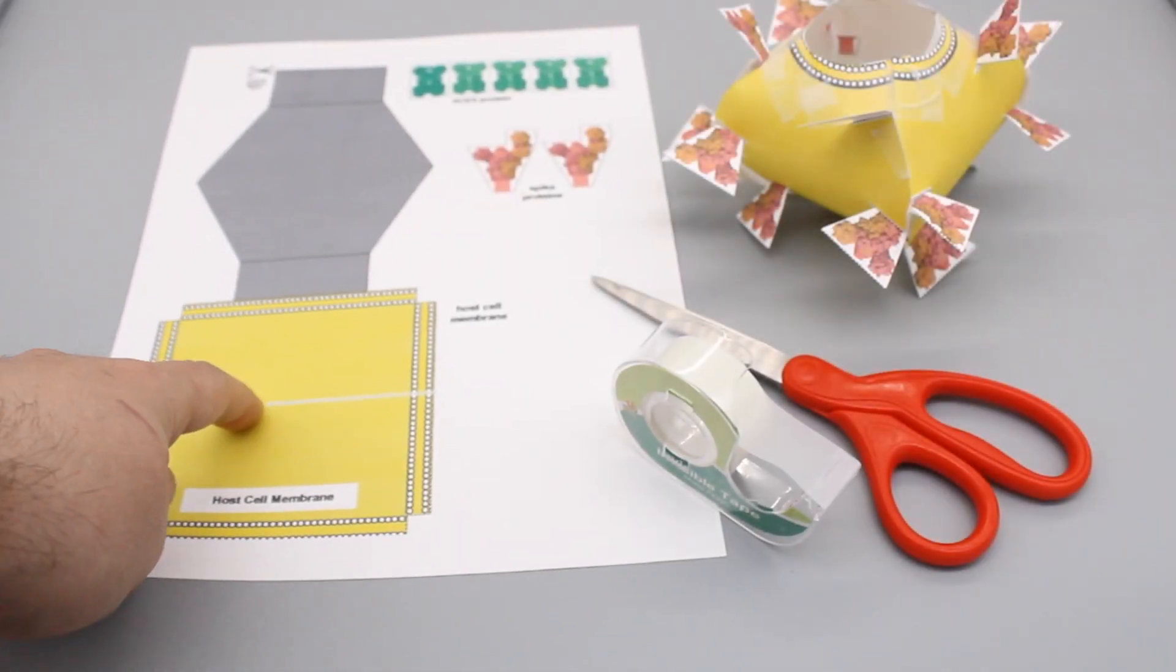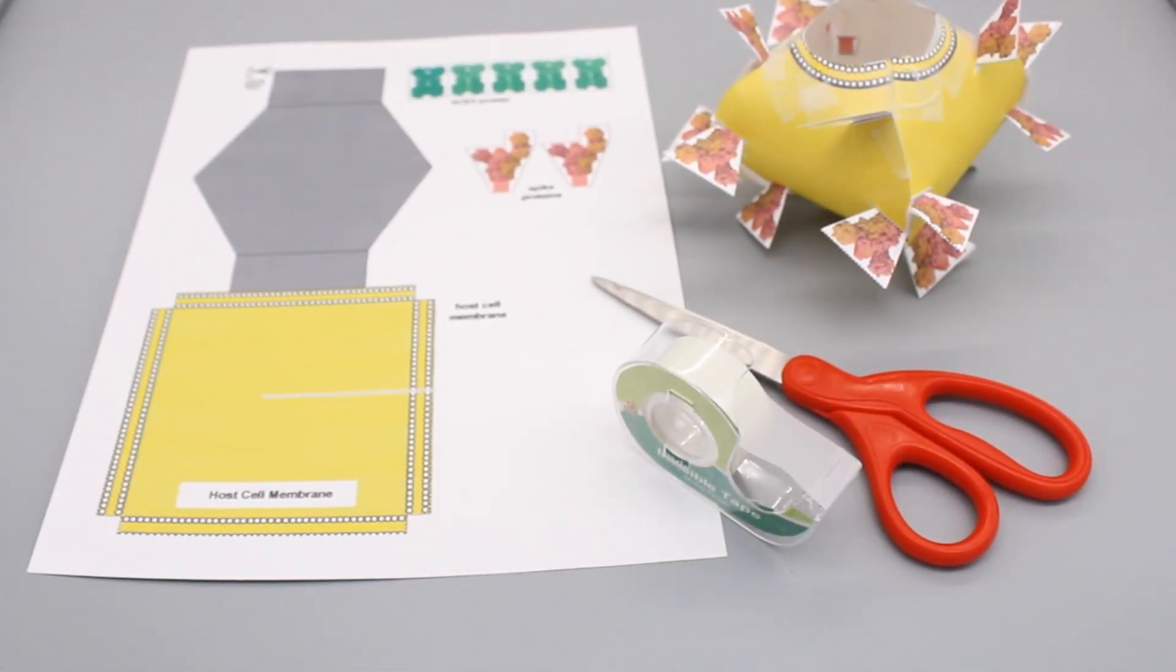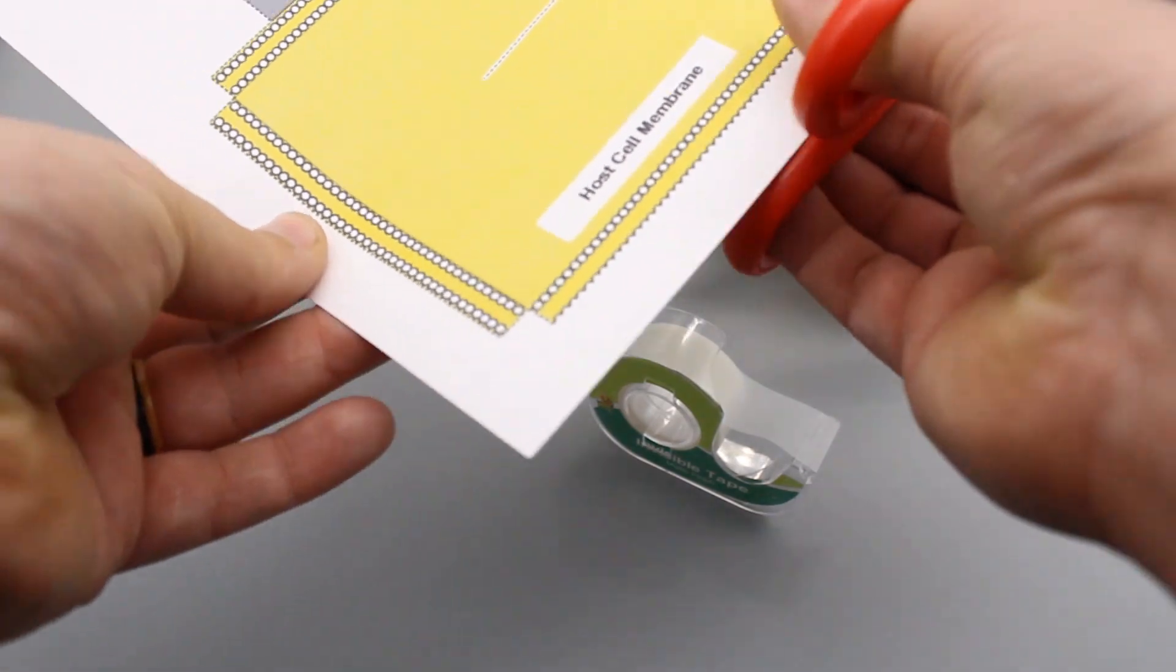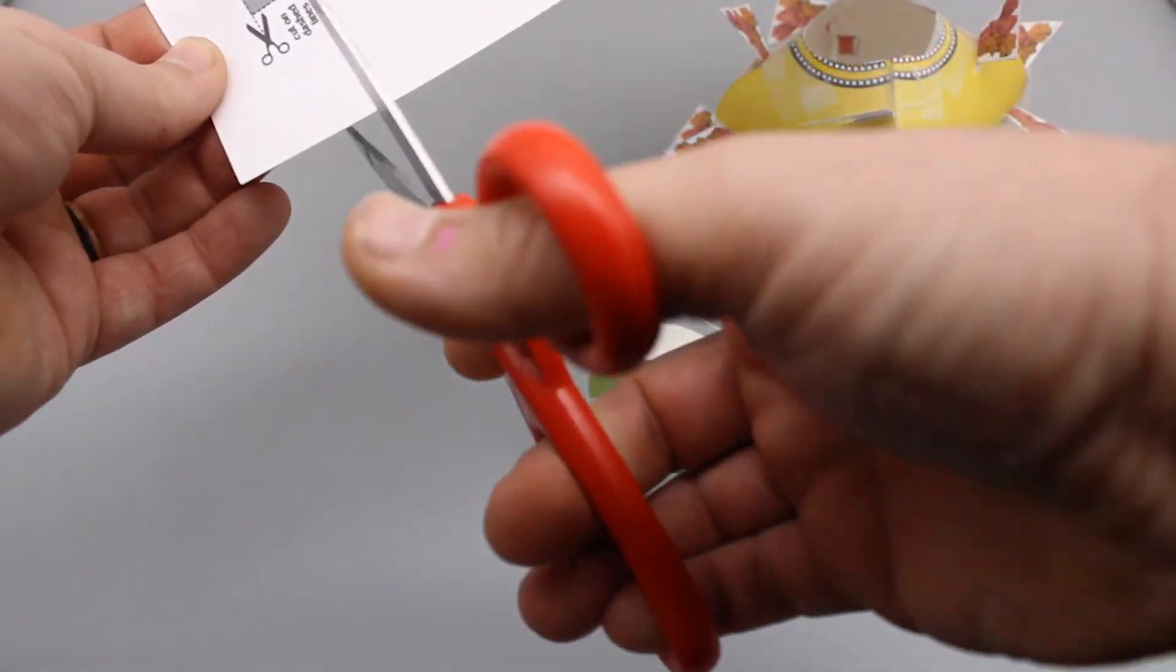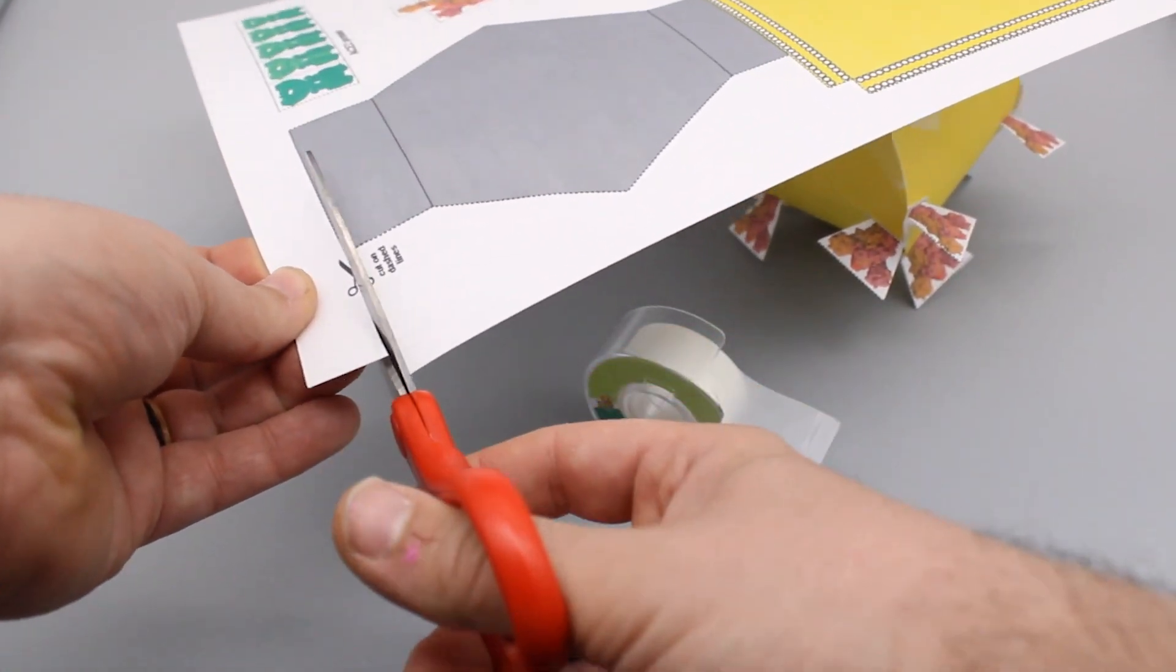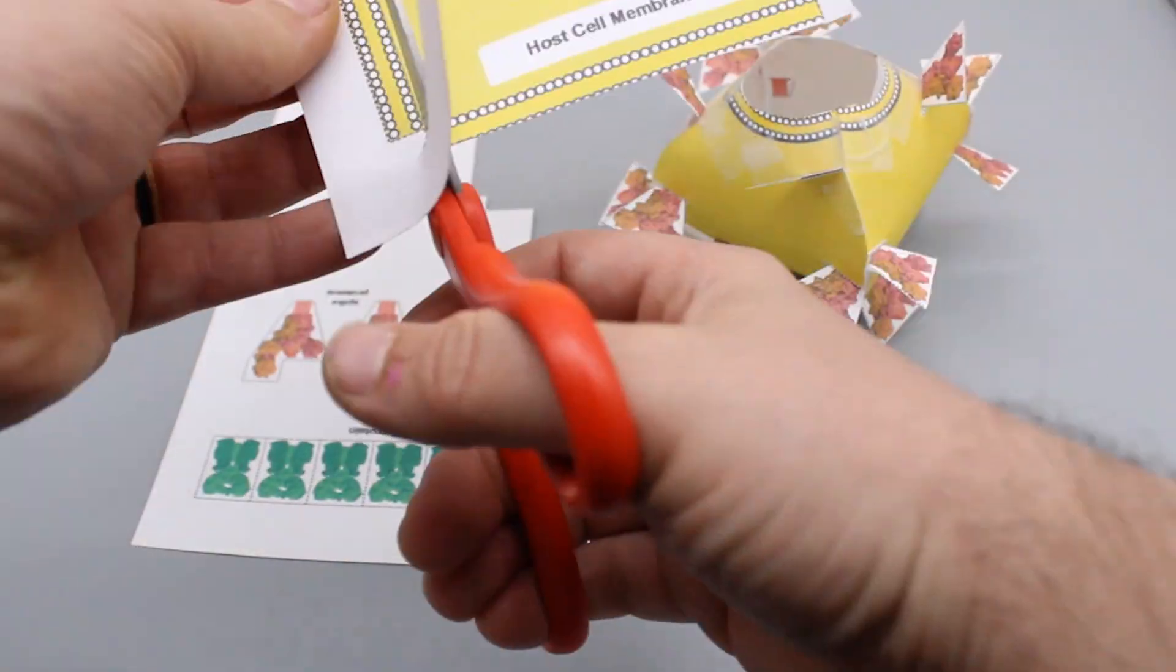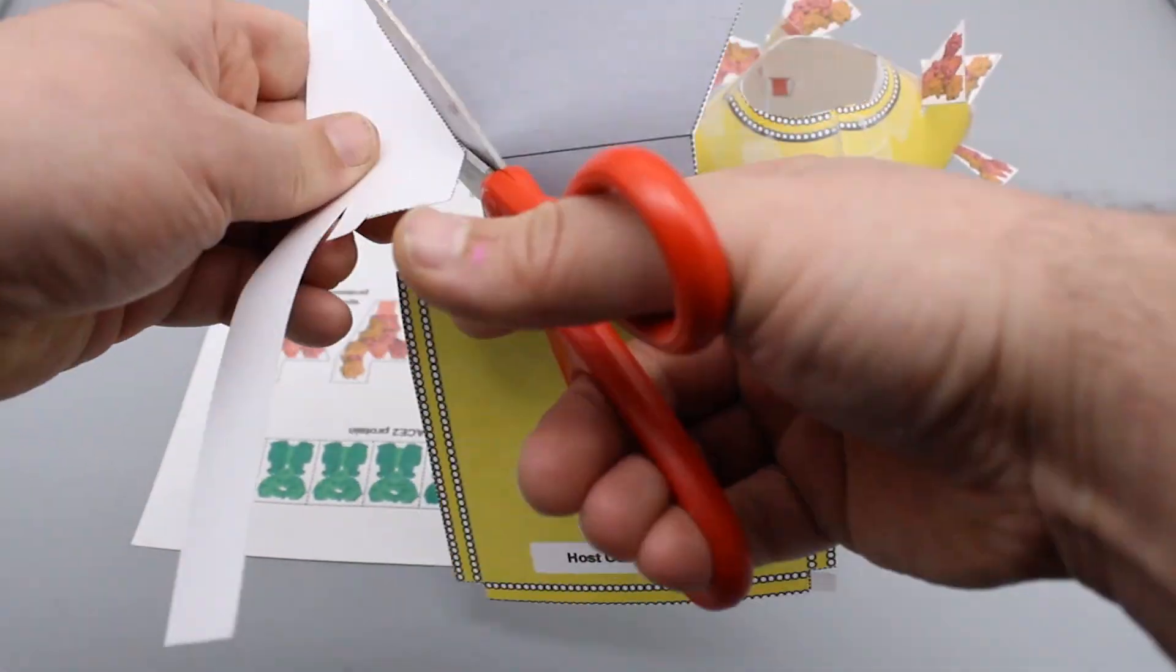The first step is to print out the PDF template that we've provided. This is available in color and black and white, as well as drawing instructions if you don't have access to a 2D printer at your house. First, start by cutting this template out anywhere that there's a dotted line. We're going to speed up this footage, so you don't have to watch me cutting and taping all afternoon.